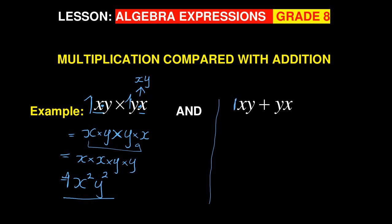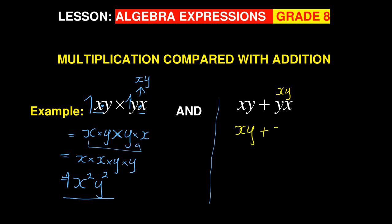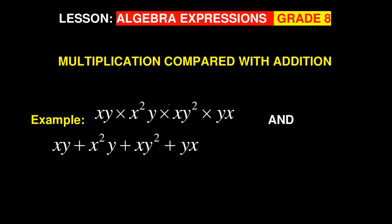Now for addition: xy plus yx. Since yx is the same as xy, I now have xy plus xy. The coefficient before each is one. One plus one equals two, and the variable is xy, so the answer is 2xy. Compare the two results: multiplication gave x²y² with powers, while addition gave 2xy with a coefficient.